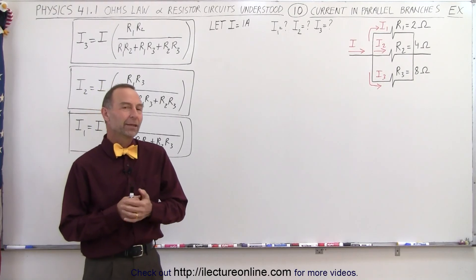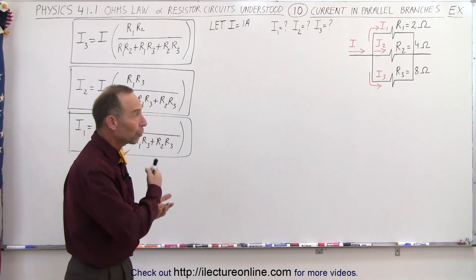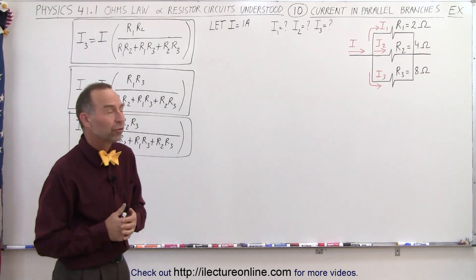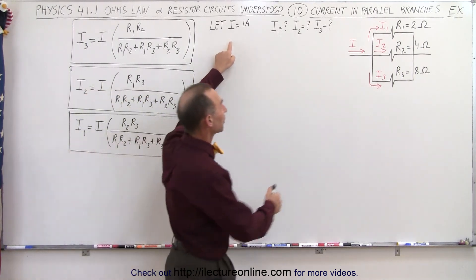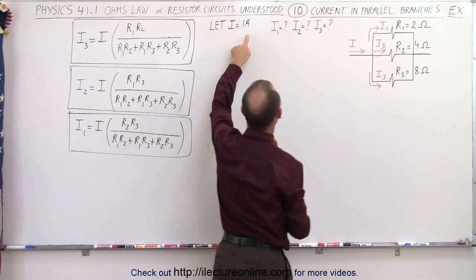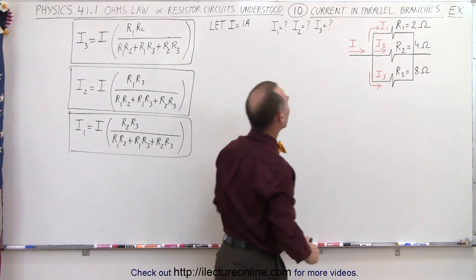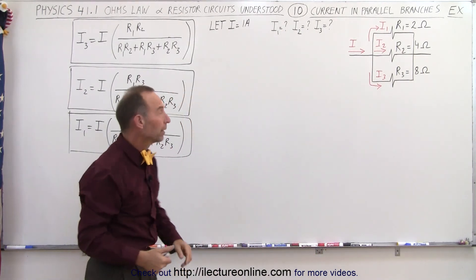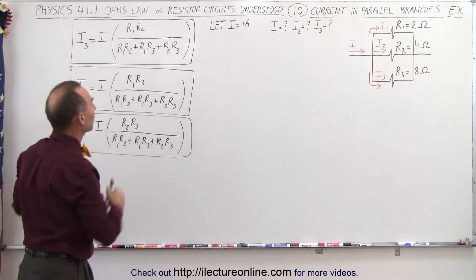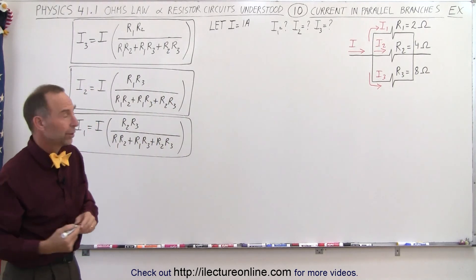Welcome to Y Lecture Online. Now let's actually calculate the currents in each of the three branches. Let's assume that the current entering the branch point is equal to 1 amp, and we're going to determine I1, I2, and I3. Now here are the three equations we derived in the previous video, so let's see how well they work.